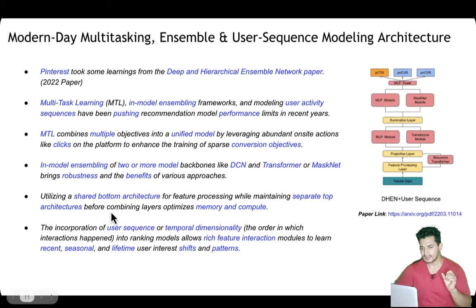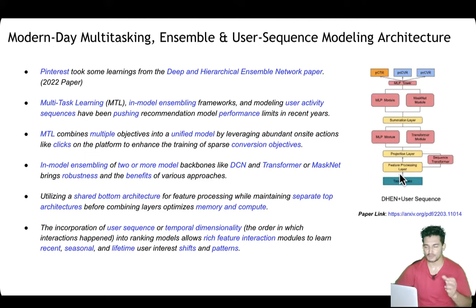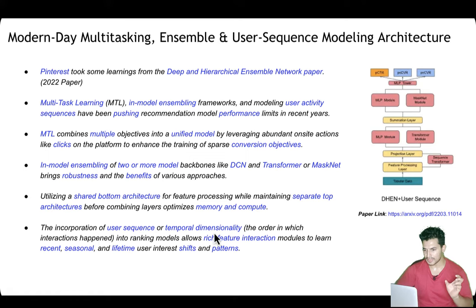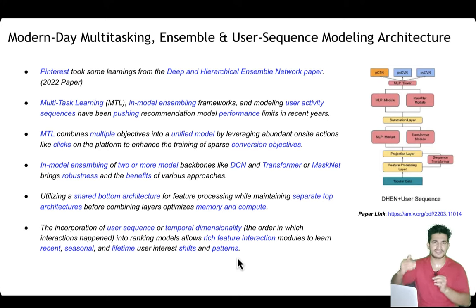The modern architecture uses a shared bottom architecture for input processing, embeddings, and projection — efficient from a memory and compute perspective — while maintaining separate top architectures before a combining layer. It also incorporates user sequence and temporal dimensionality: using transformer-style sequential architectures, the model captures not just what interactions happened but the order in which they happened, learning recent, seasonal, and lifetime user interest shifts and patterns.